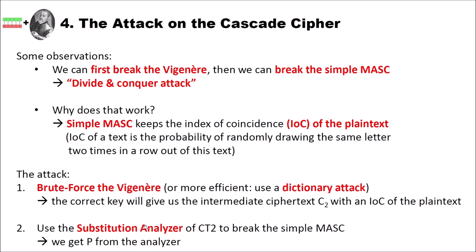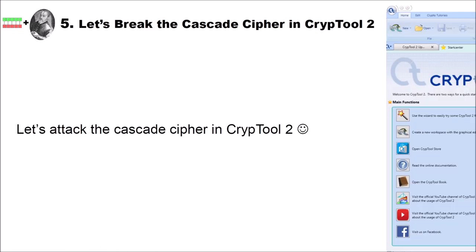When we found the correct keyword using the dictionary and the IOC, in the second step we use the substitution analyzer of CrypTool2 to break the remaining MASC. The substitution analyzer internally uses hill climbing and can easily break monoalphabetic substitution ciphers. So finally we get the plaintext P from the analyzer. Now, after a lot of theory, let's do it in practice and attack the cascade cipher in CrypTool2.